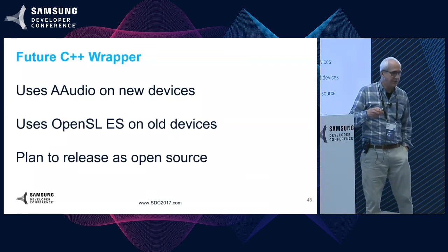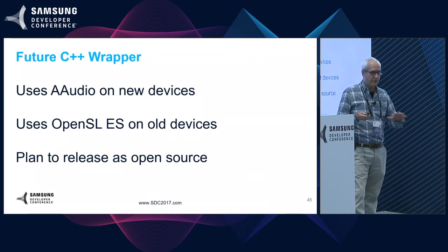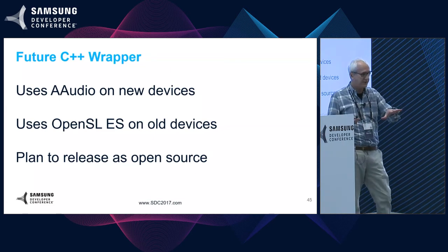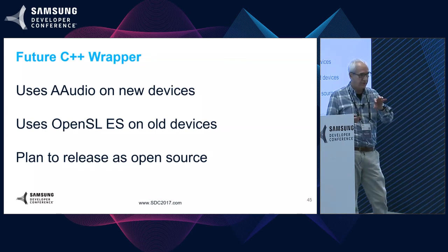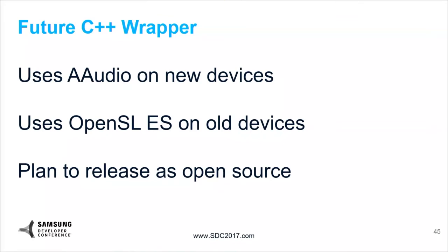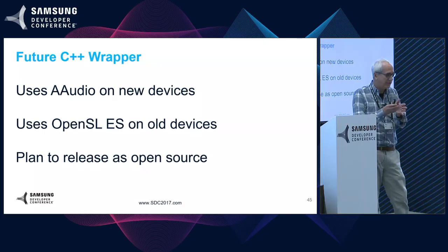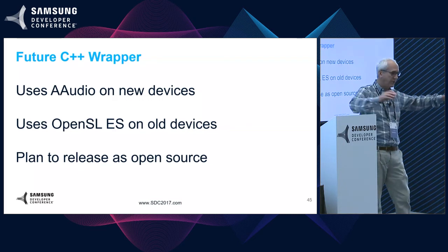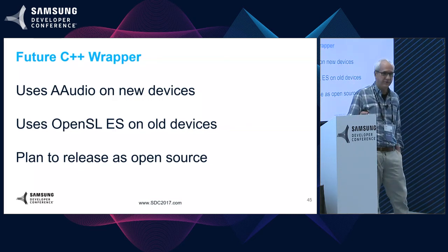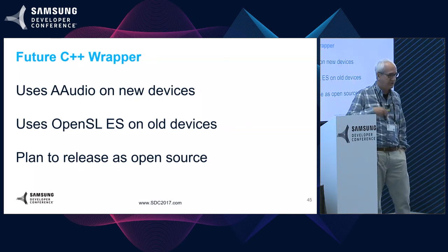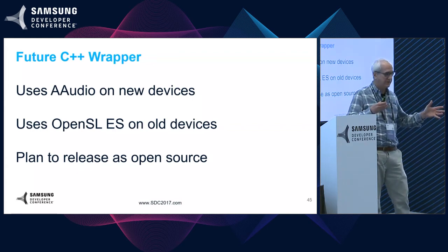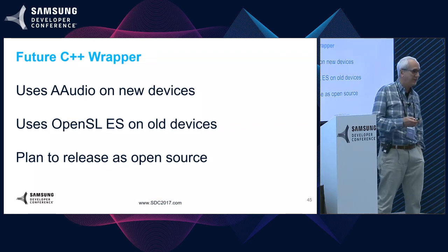In the future, we're writing a C++ wrapper called Oboe. If you want to run on old and new devices, you can write to this C++ wrapper, and it will automatically use A-Audio on new devices and OpenSLES on old devices. Right now A-Audio is only on a few devices, but this Oboe API will work on 99% of devices out there. If you use that API, you get the benefits automatically as more devices adopt A-Audio.